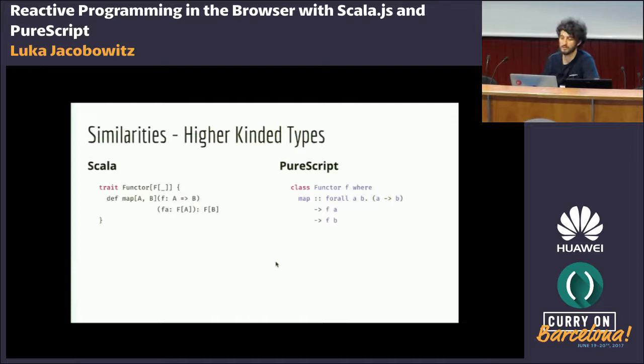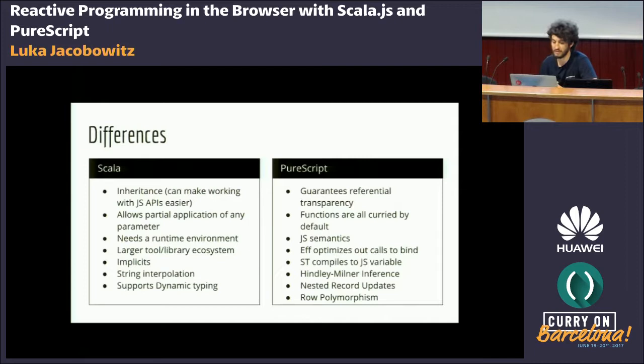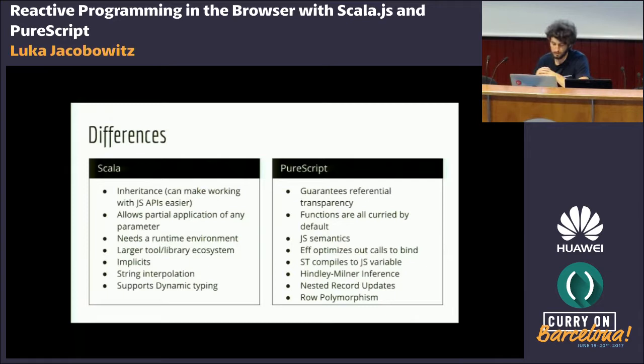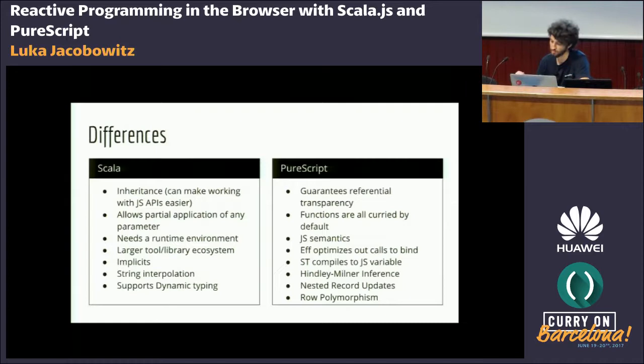Now let's look at some differences. In Scala we have inheritance, meaning subtype polymorphism, which can make it easier to work with JavaScript APIs since many of those are inherently based on inheritance. Modeling these in PureScript can be tedious — you could define some sort of DSL, but it takes a lot more steps. On the other hand, PureScript guarantees referential transparency through its purely functional type system.